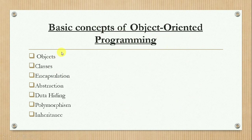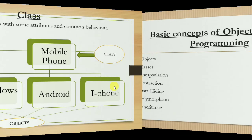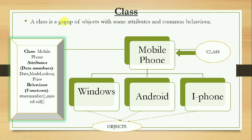The basic concepts of object-oriented programming are: objects, classes, encapsulation, abstraction, data hiding, polymorphism, and inheritance. Let us learn them one by one. A class is a group of objects with some attributes and behavior. Attributes refers to the properties, and in the case of a class, the attributes are the data members and the behavior is represented by the functions.